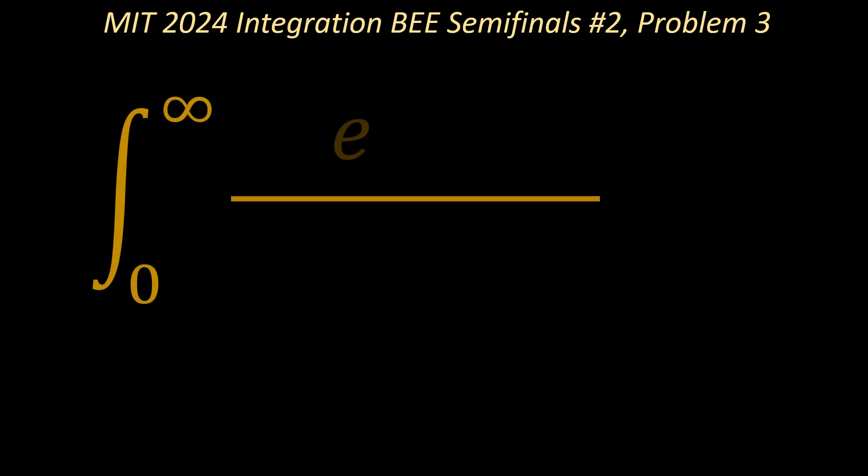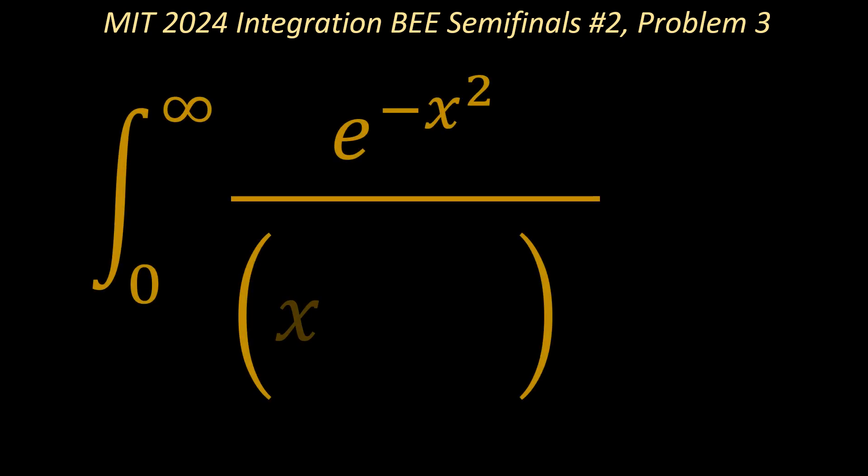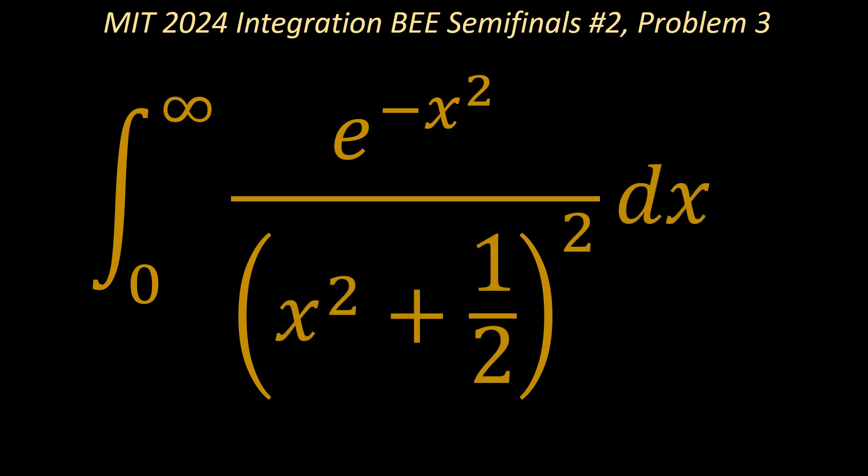Today's problem comes from the MIT 2024 Integration B semifinals, number 2, problem 3, which is the definite integral from x equals 0 to x equals infinity of e to the power negative x squared, over (x squared plus one half), all squared.